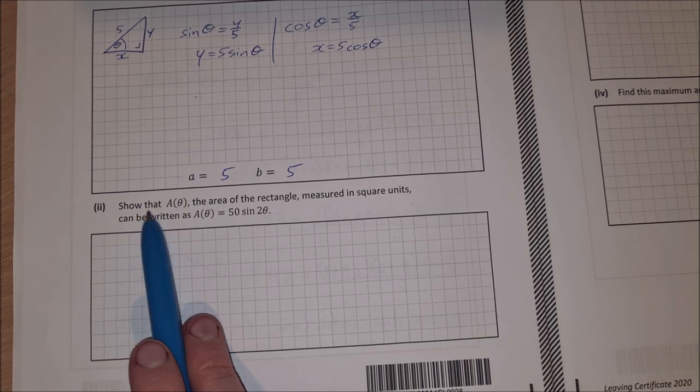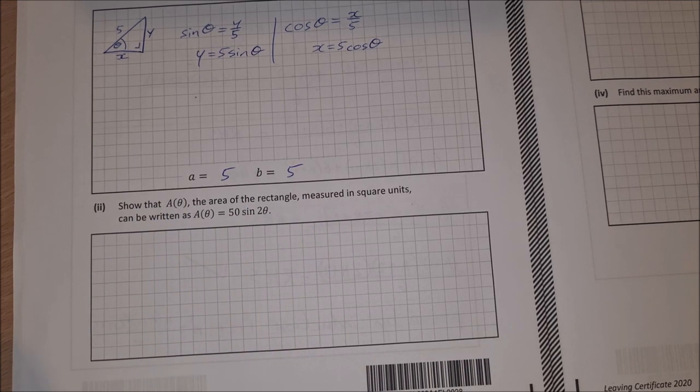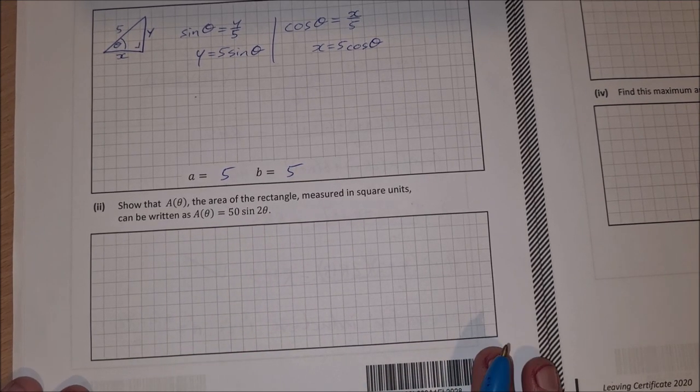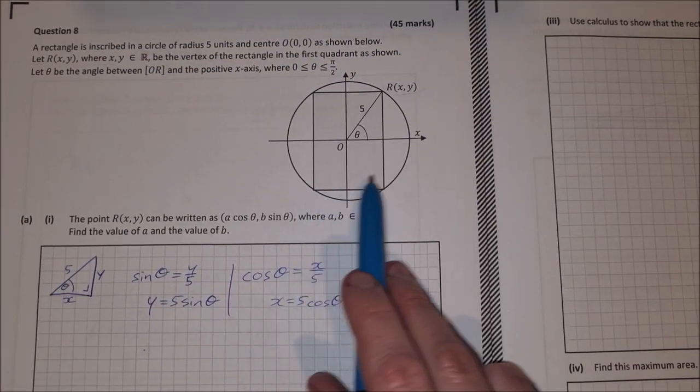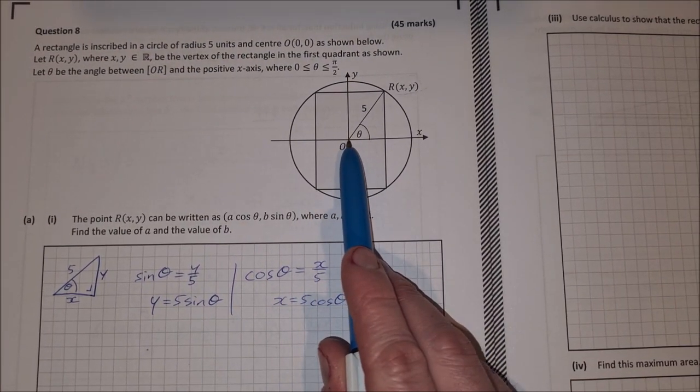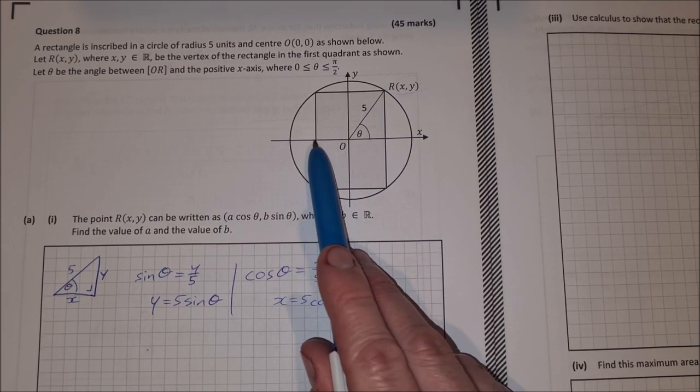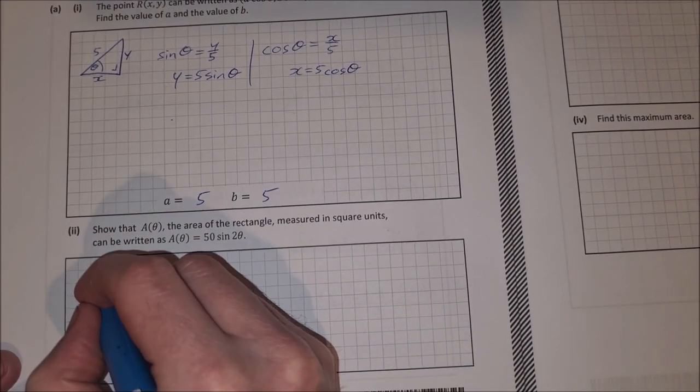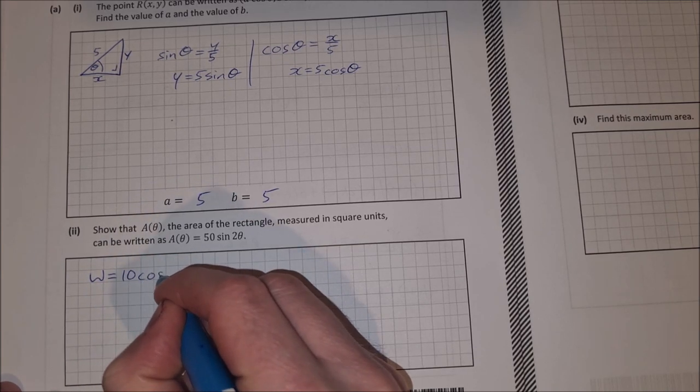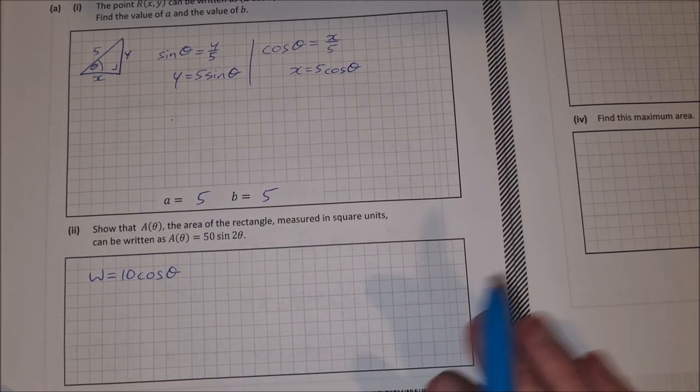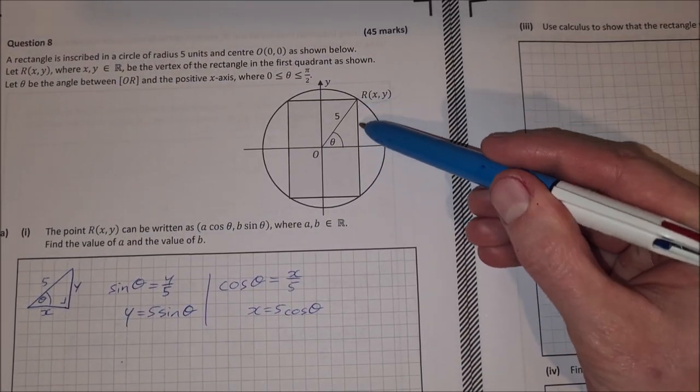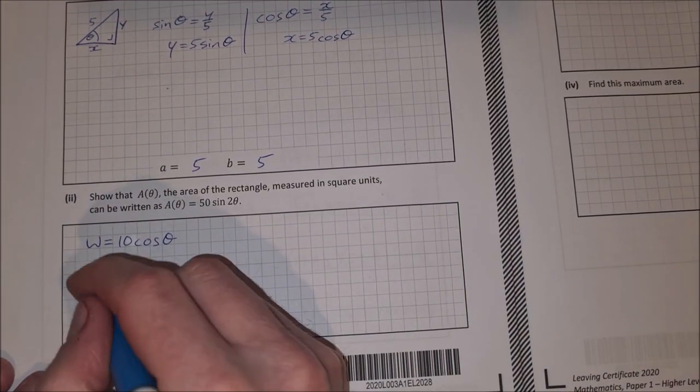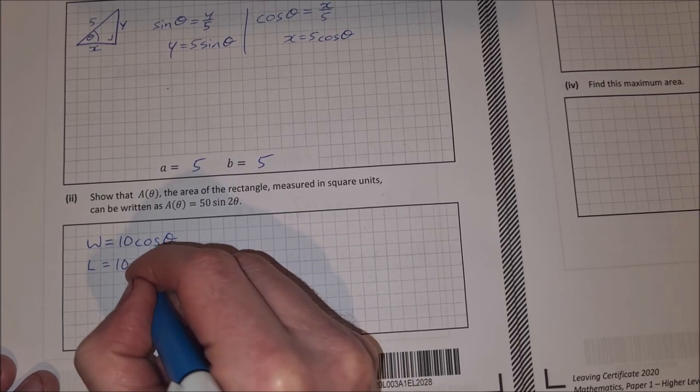Part 2 then says show that A of theta, the area of the rectangle measured in square units, can be written as A of theta is equal to 50 sine 2 theta. Okay, well, the length and width of this rectangle, if this here is 5 cosine theta, then the complete width is twice that. So that's going to be 10 cosine theta. So we can say the width is equal to 10 cosine theta. And likewise, with the height or the length, this is 5 sine theta. So in total, we have 2 of them. So it'll be 10 sine theta. So let's call it the length is equal to 10 sine theta.